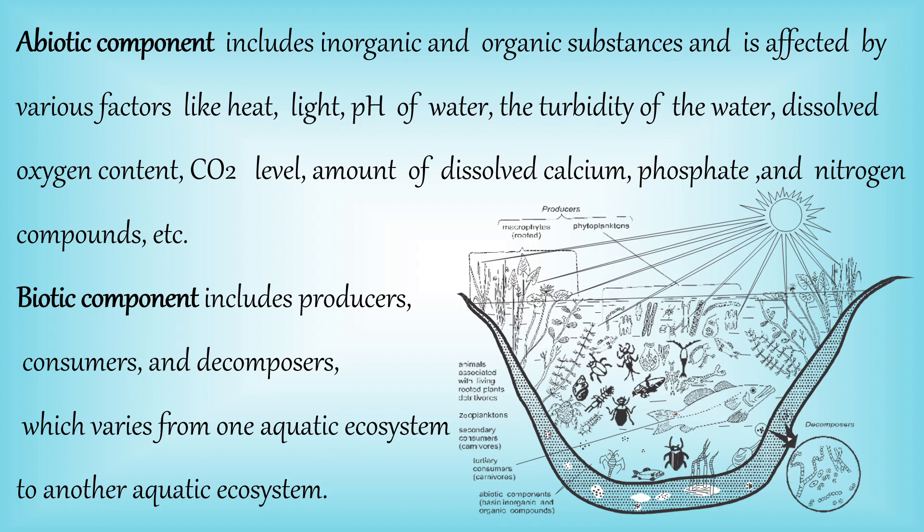In freshwater ecosystems the producers can be green algae, while in marine ecosystems they can be brown algae. So living components — producers, consumers, and decomposers — vary from one aquatic ecosystem to another.